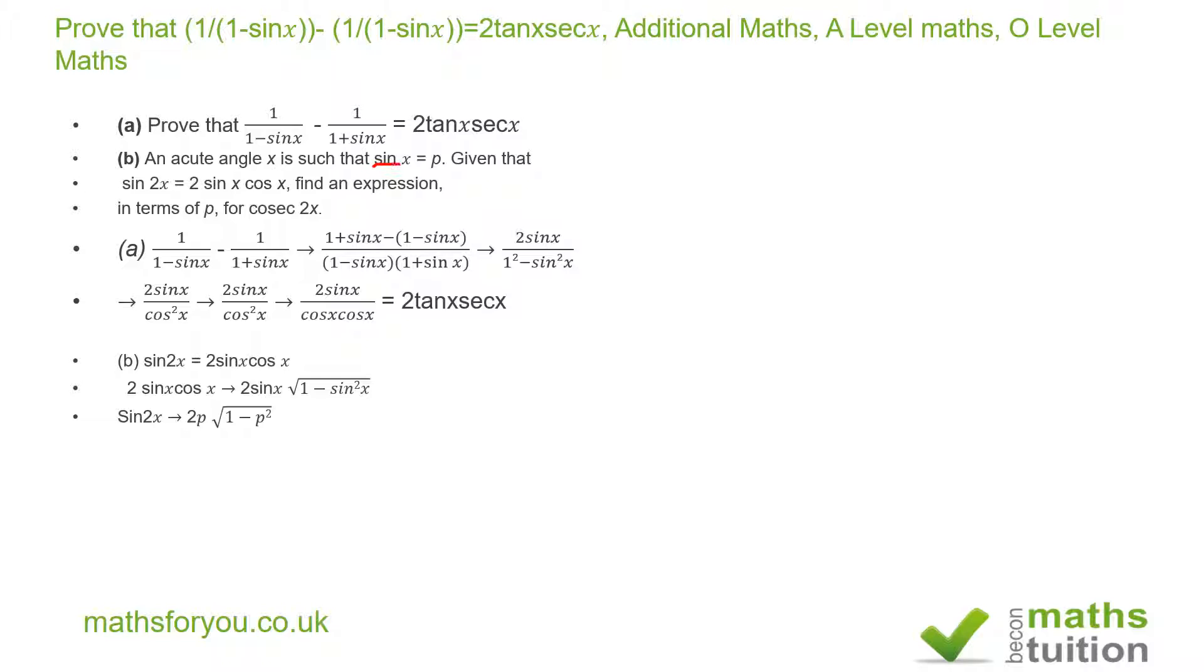We know that sin x is equal to p. So that becomes p and that becomes p squared. So sin 2x becomes 2p multiplied by the square root of 1 minus p squared.